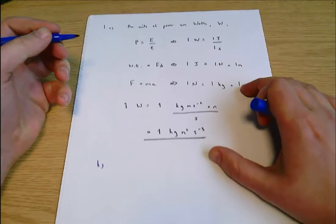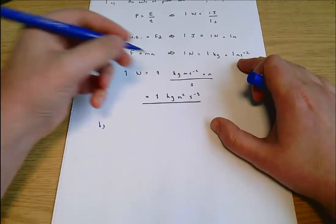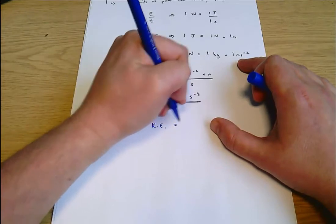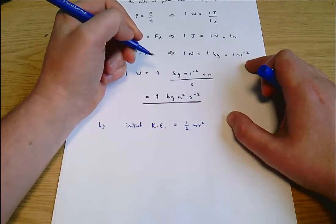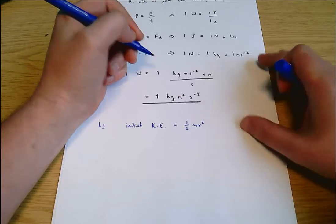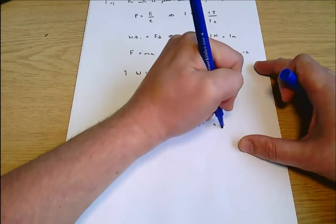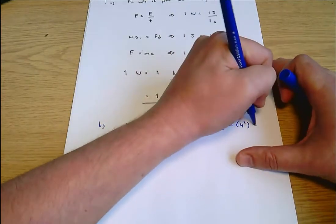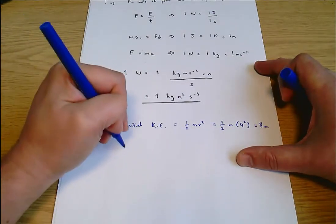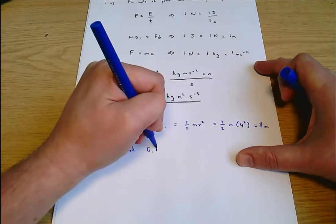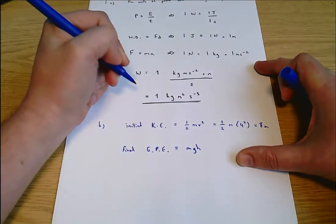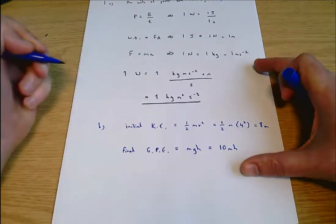Initially we throw this object upwards and it's got all kinetic energy. So the initial kinetic energy equals one half mv squared. We know v equals four and we don't know m. So that equals a half times m times four squared, which equals 8m. Then it says think about how that's converted to gravitational potential energy.